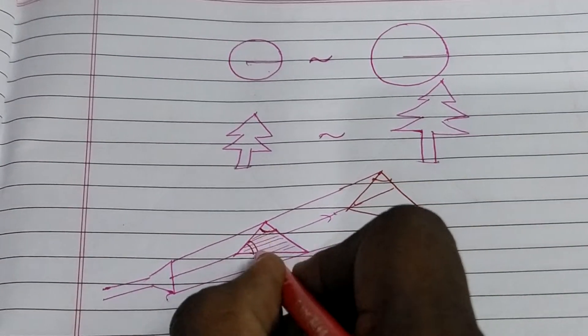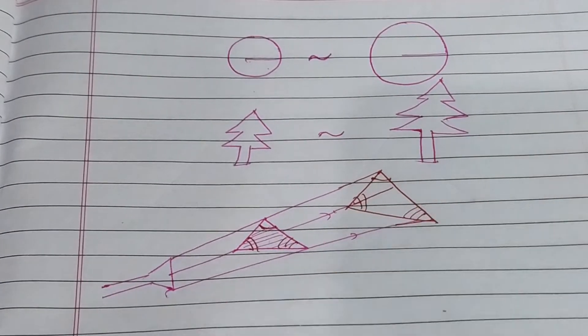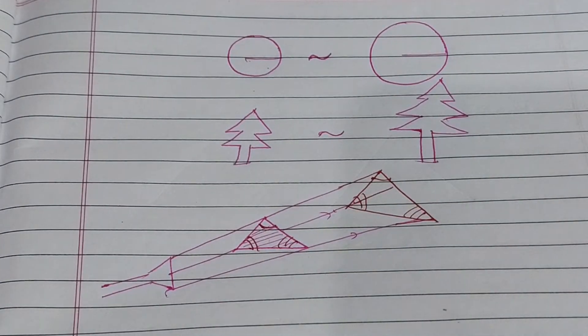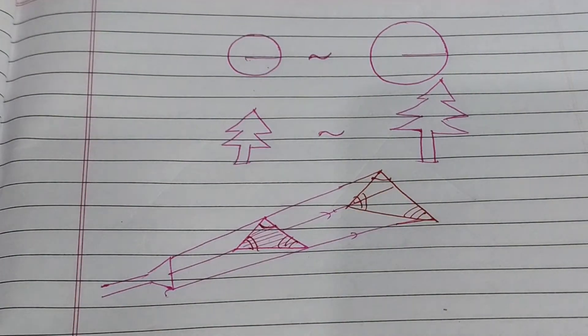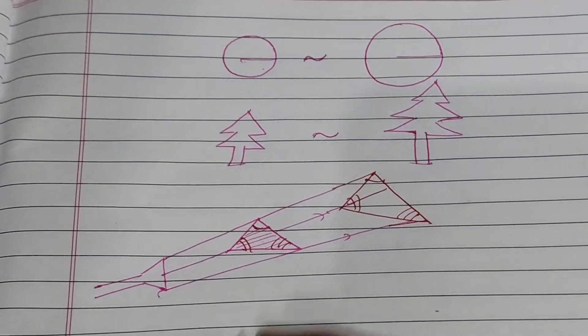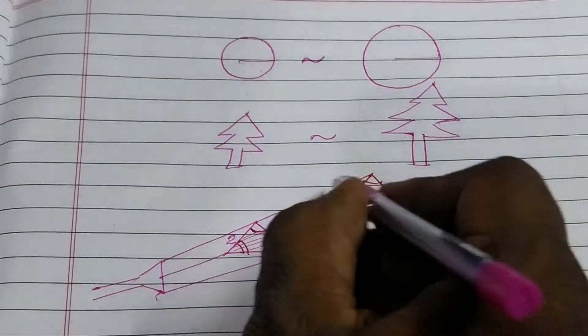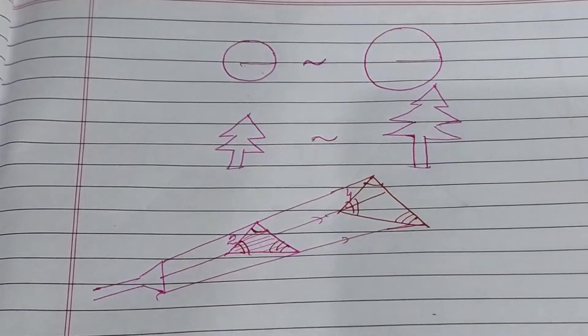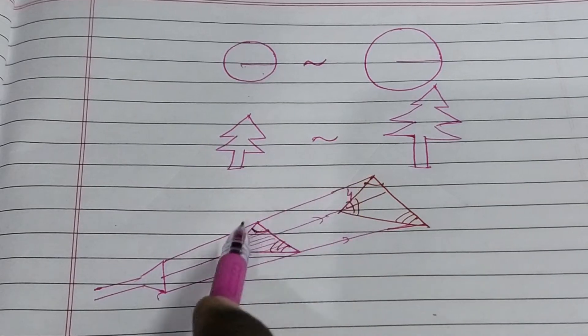This angle same. This angle also same. And this will also same. Means these two are similar triangle because these two are looking alike. But sides will be in proportion. Suppose, the side of this triangle is 2 cm. If this is 4 cm, then you can say that the ratio of their sides is 1 is to 2.